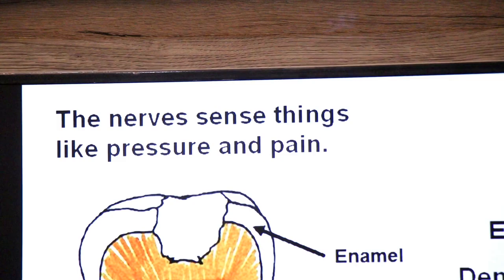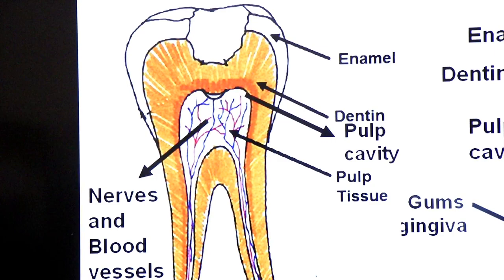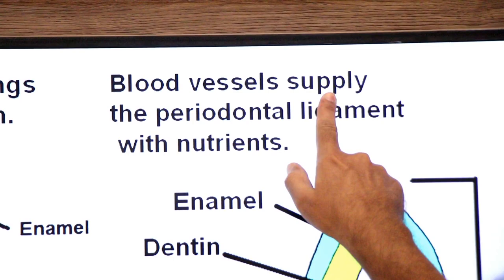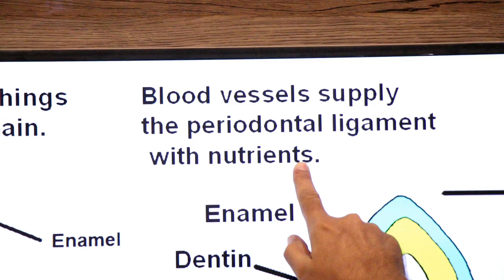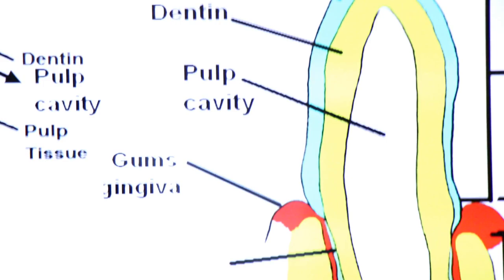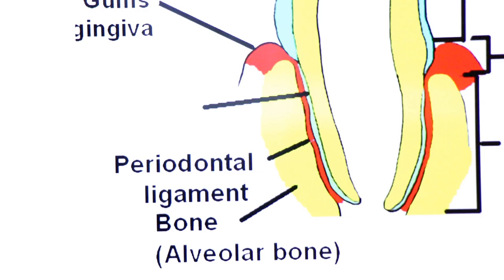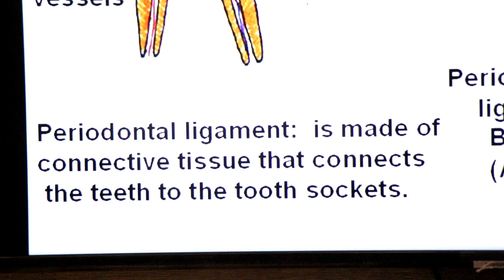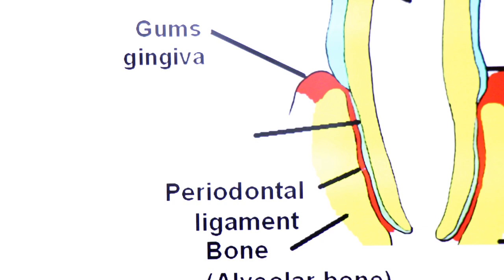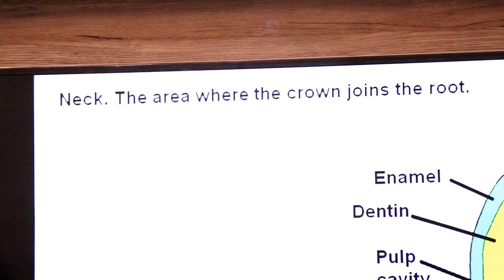The nerves sense things like pressure and pain. The blood vessels provide nutrition — they supply the periodontal ligament with nutrients. There is a connective tissue called periodontal ligament which connects the teeth to the socket, called dental alveoli. This is the periodontal ligament, which connects the teeth to the bone and to the socket.